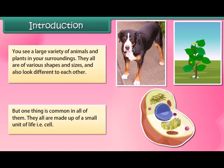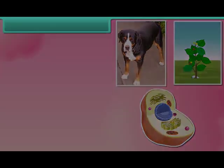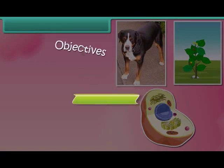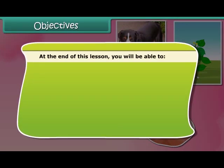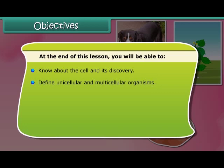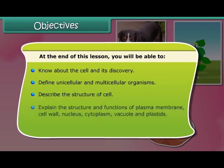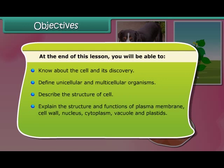In this module we are going to learn about the cell and its structure. At the end of this lesson you'll be able to know about the cell and its discovery, define unicellular and multicellular organisms, describe the structure of a cell, explain the structure and functions of cell membrane, cell wall, cytoplasm, nucleus, vacuole, and plastids, and differentiate between the plant and animal cell.